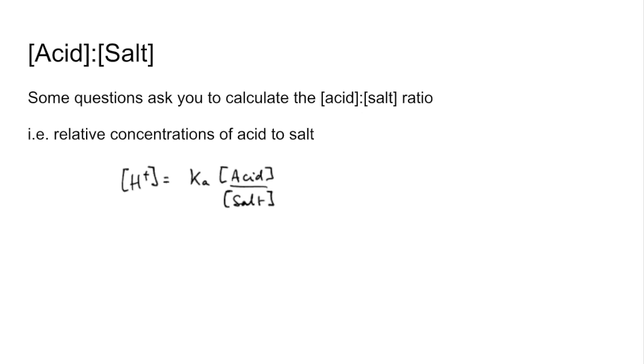Some questions ask you to calculate the acid to salt ratio. That's basically the relative concentrations of the acid compared to the salt. So again there's the Casadova salt equation. The acid to salt ratio is this part here. All I've done is I've taken Ka over the other side and I'm dividing by Ka. So acid to salt ratio is equal to the H plus concentration divided by the Ka of the weak acid.